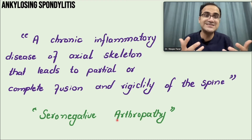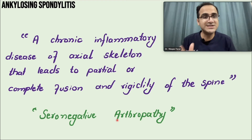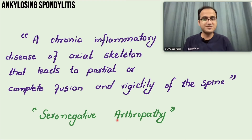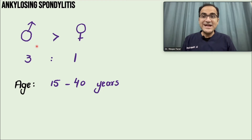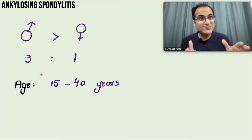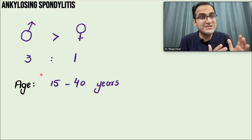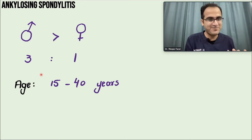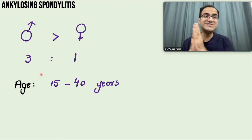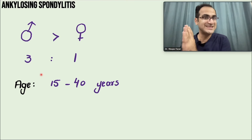Unlike other autoimmune conditions that show positive tests such as ANA, anti-CCP, or anti-dsDNA, these seronegative arthropathies do not appear on antibody tests. Ankylosing spondylitis is more common in males compared to females - unlike other autoimmune conditions which mainly affect middle-aged females. Ankylosing spondylitis affects young males, which makes it an exception.